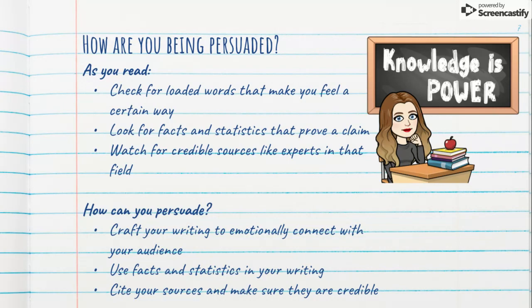Now how can you persuade? When it comes time to write your paper, make sure you're crafting to emotionally connect with your audience. Before you begin, ask yourself how you want them to feel — sad, scared, or uplifted — then appeal to them using language that's going to draw those emotions out. Use your facts and statistics. We're going to look at a lot of research as we go through the unit, so pull from those things. People like facts and statistics because it makes them feel like this is science, so use those things to your advantage.